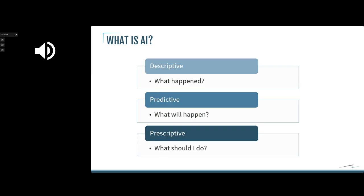AI can typically be descriptive, predictive, or prescriptive. Descriptive AI answers 'what happened?' — if I need it to go through and analyze data to determine what happened over a period of time, maybe in financial data, that's descriptive. It can use language to put together a description, but it's essentially describing something that occurred.